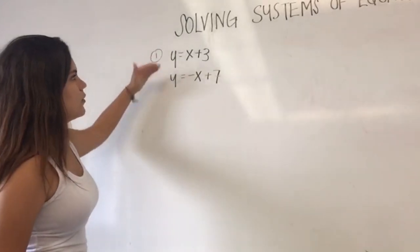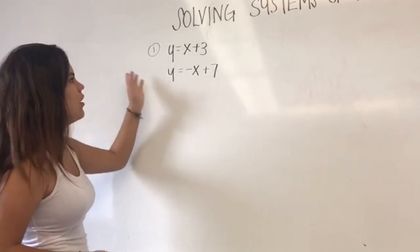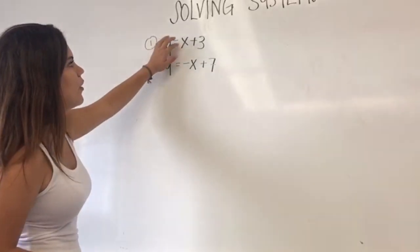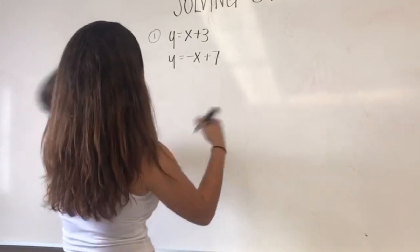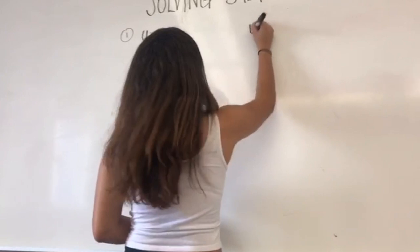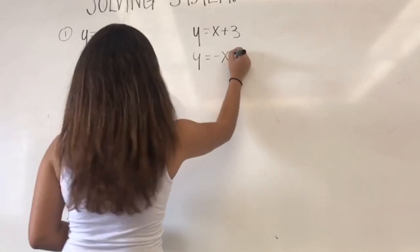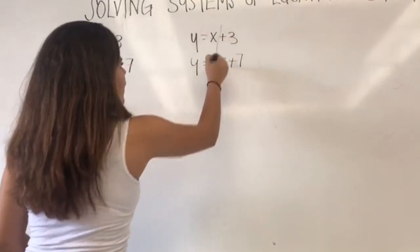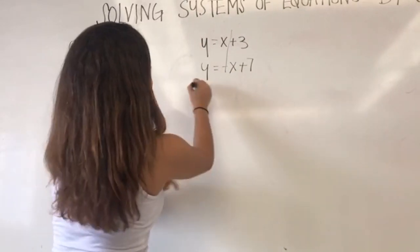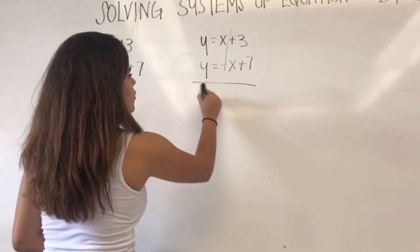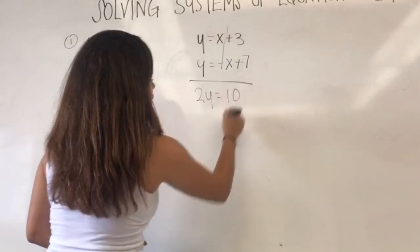So what we are going to try to do is cancel one of the two variables. It could be y or x. In this case we already have x and the negative x, so it will be easier to cancel. We have y equals x plus 3 and y equals negative x plus 7. So here we cancel it out. We are subtracting and adding, we are not multiplying at all. And what we have is y plus y is 2y. You copy this the same order, and then this is a 10.